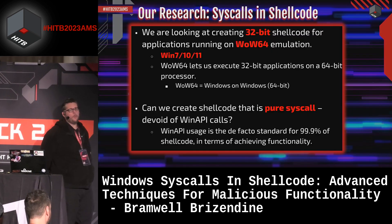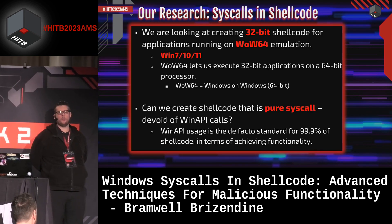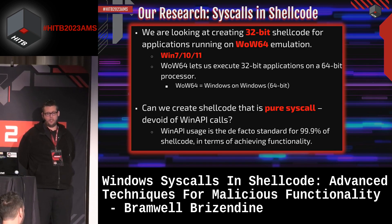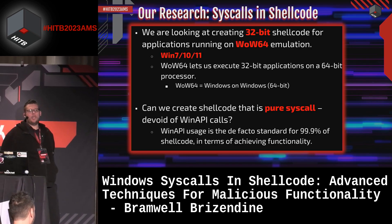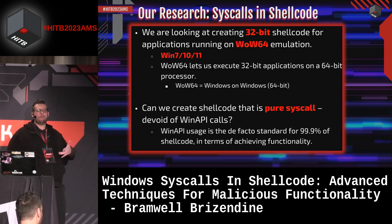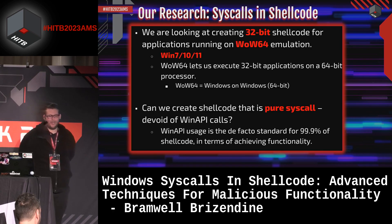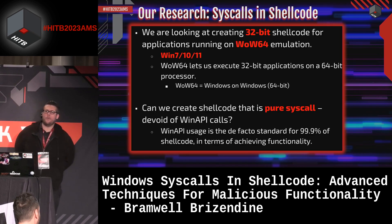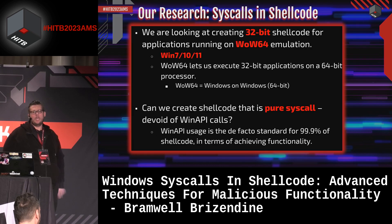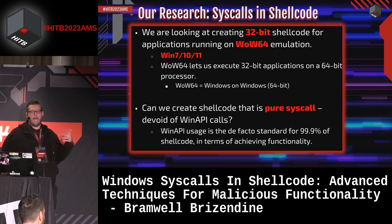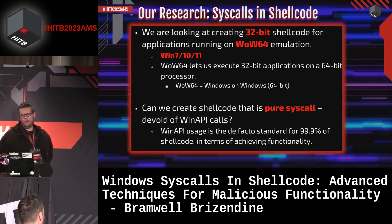The focus of this research is 32-bit WoW64, because that is the predominant vast majority of Windows shellcode. If you were going to do it in a 64-bit style, that doesn't need a lot of special work. But WoW64 really does require a lot of special effort. WoW64 provides emulation for 32-bit applications on a 64-bit environment — it gives the appearance of being 32-bit but is actually 64-bit, with constant context switching. The focus here is also: can we create shellcode that is pure syscall? We want to be the 0.1% — we don't want to use Windows APIs.